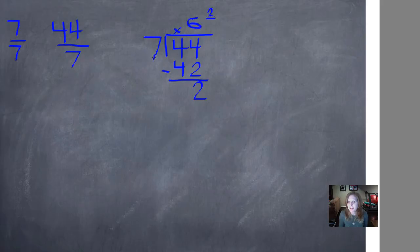And then we're going to bring this 7 all the way around and write it on the bottom. In other words, our denominator is staying the same. It doesn't change at all unless we simplify, which we're not doing yet. So we have six and two sevenths. So 44 sevenths is equivalent to the whole number six and two sevenths.